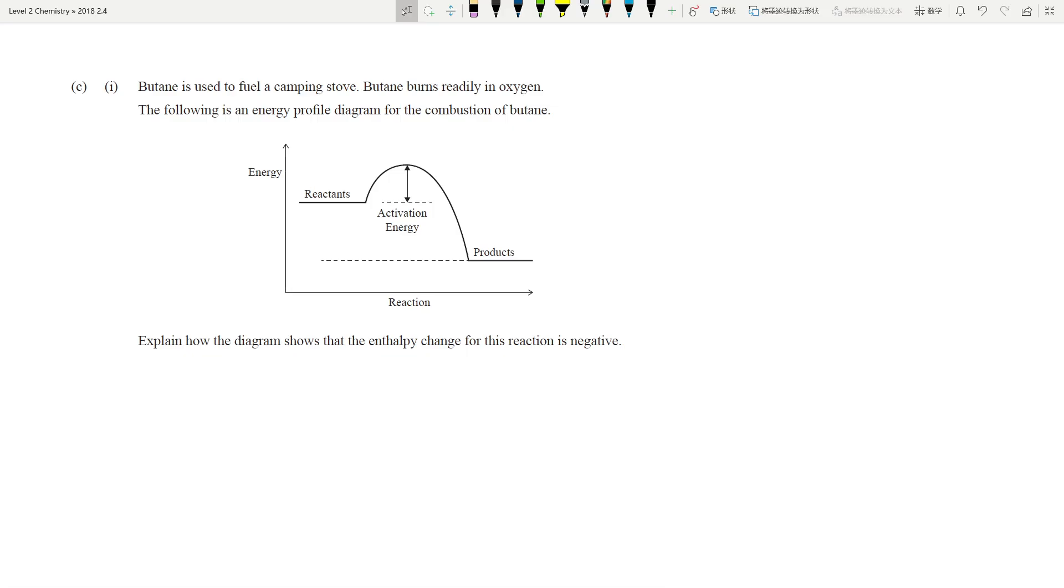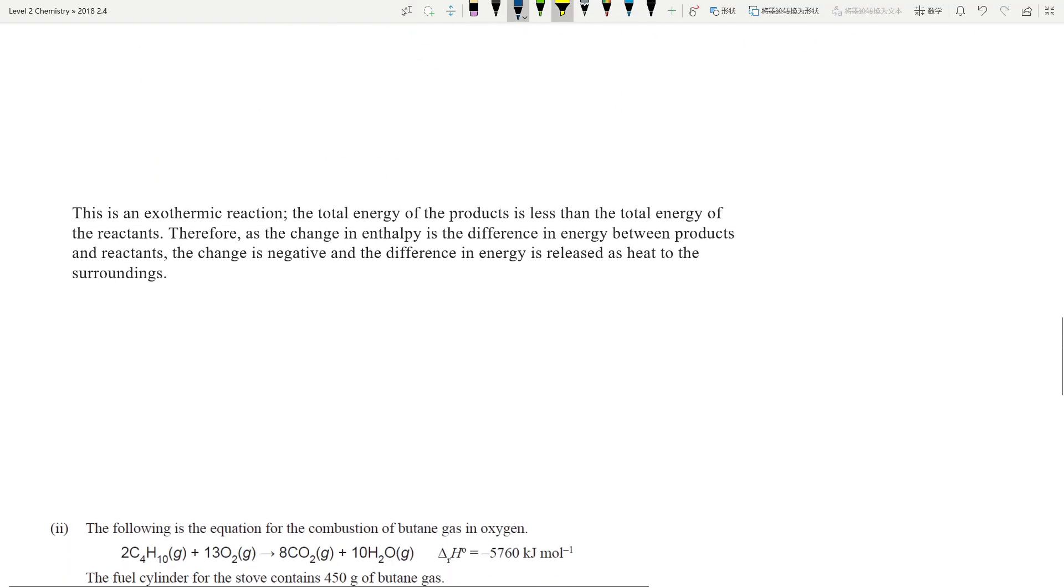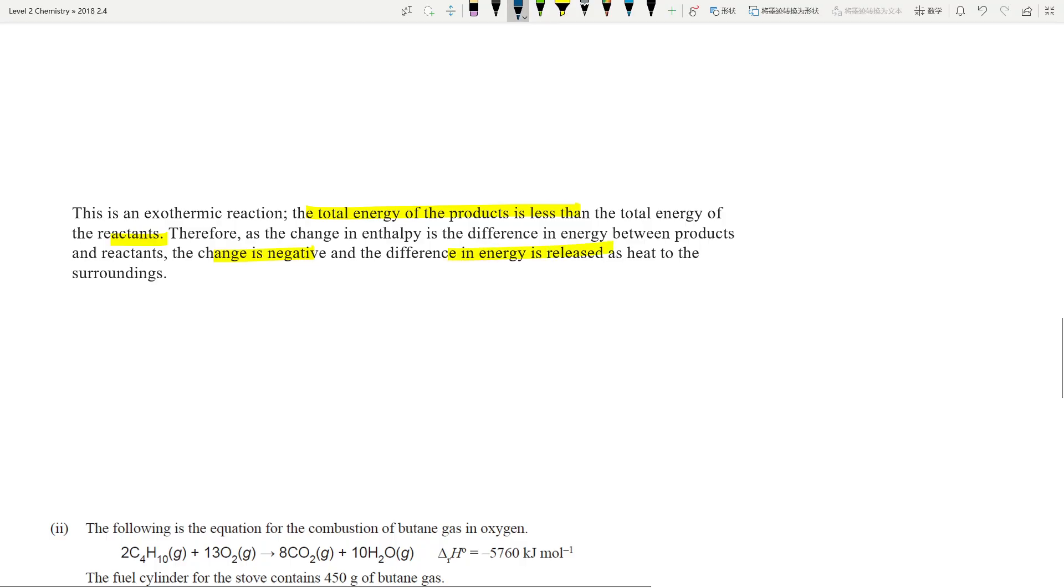Now butane is used to fuel a camping stove. Explain how the diagram shows enthalpy change is negative. This is the enthalpy of the products, this is the enthalpy of reactants. Change of enthalpy is the enthalpy of products minus the enthalpy of reactants. As you can clearly see, the enthalpy of products is much less than the enthalpy of the reactants. Therefore, the change of enthalpy will be negative and energy is being released.